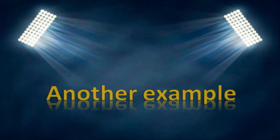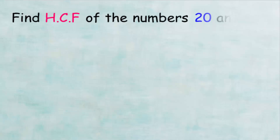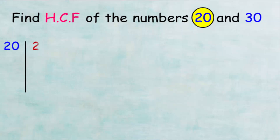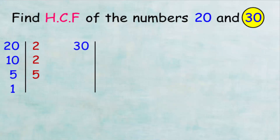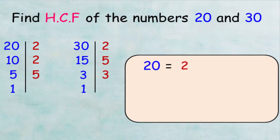Let's take another example. In this example, we want to find the HCF of the numbers 20 and 30. We will do as we did before. First, factorize the number 20 to its prime factors: 20 divided by 2 gives 10, 10 divided by 2 gives 5, and 5 divided by 5 gives 1. Then, let's factorize the number 30: 30 divided by 2 gives 15, 15 divided by 5 gives 3, and 3 divided by 3 gives 1. So we can write the number 20 as a product of 2 times 2 times 5, and the number 30 as a product of 2 times 5 times 3.